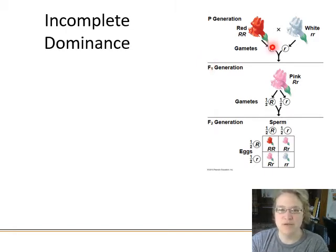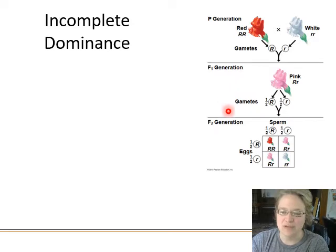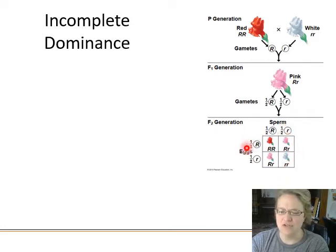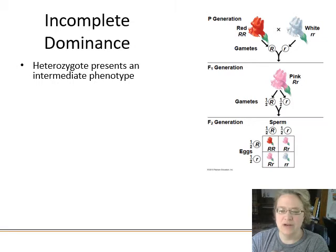The first single-gene unexpected phenotype we'll look at is incomplete dominance, which appears to be blending. You have a true-breeding white flower and a true-breeding red flower; when you breed them together you get pink — the colors appear to blend. But when you breed the F1 pink flowers together it gets weird: red flowers and white flowers pop out again.